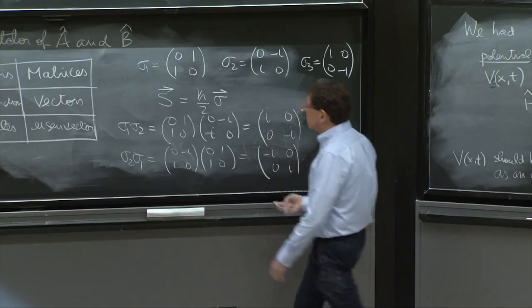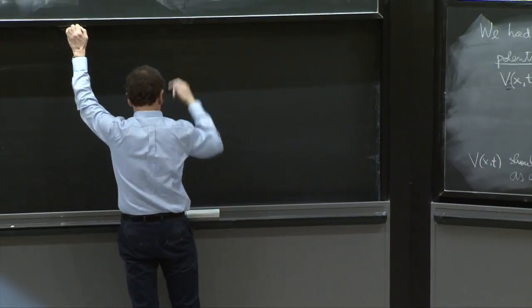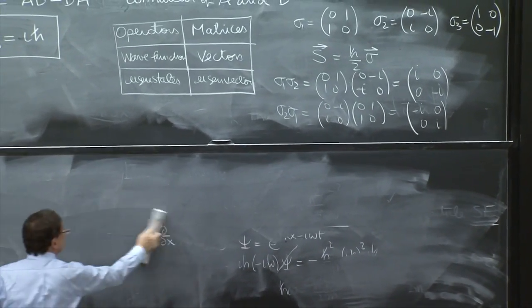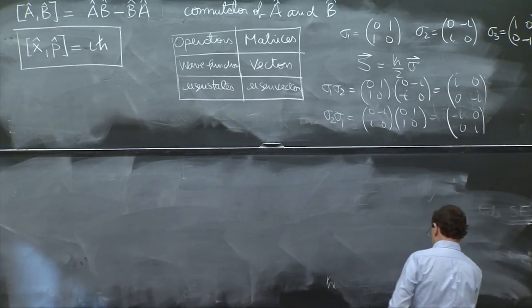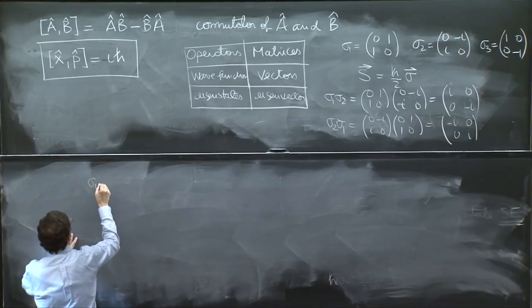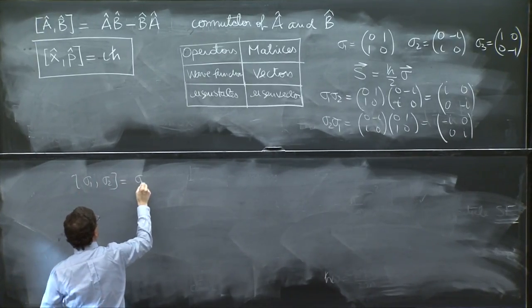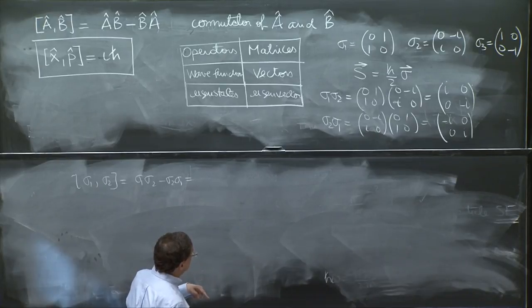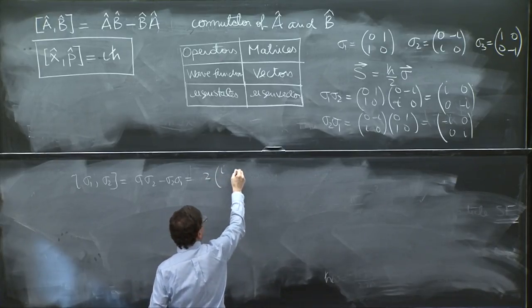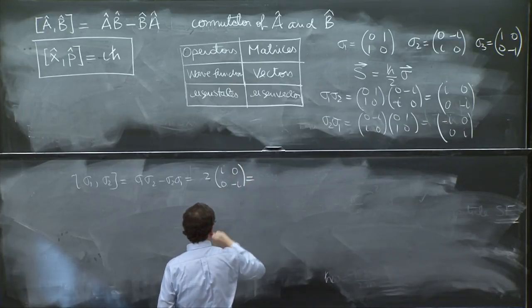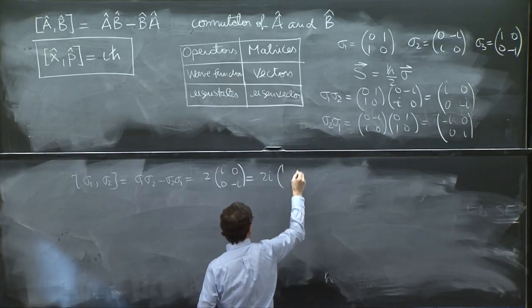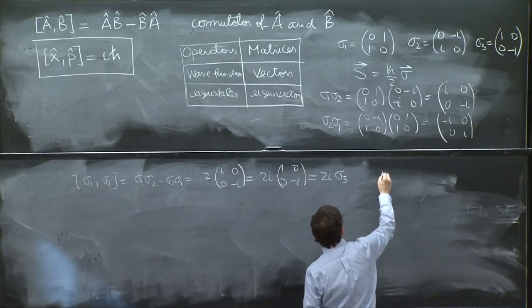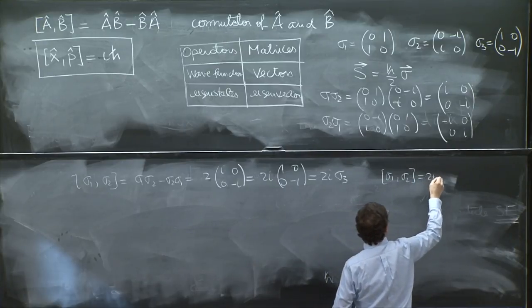And therefore, sigma 1 commutator with sigma 2 is equal to sigma 1 sigma 2 minus sigma 2 sigma 1. And you can see that they're actually the same up to a sign. So you get twice. So you get 2 times i, 0, 0 minus i. And this is 2i times 1 minus 1, 0, 0. And that happens to be the sigma 3 matrix. So sigma 1 and sigma 2 is equal to 2i sigma 3.